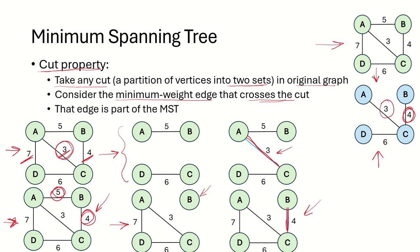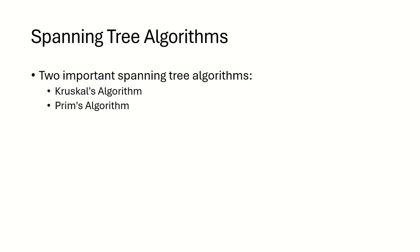This property is known as the cut property. There are two important spanning tree algorithms which can be used to find the minimum spanning tree: one is Kruskal's algorithm and the other is Prim's algorithm. We will cover both these algorithms in subsequent videos.